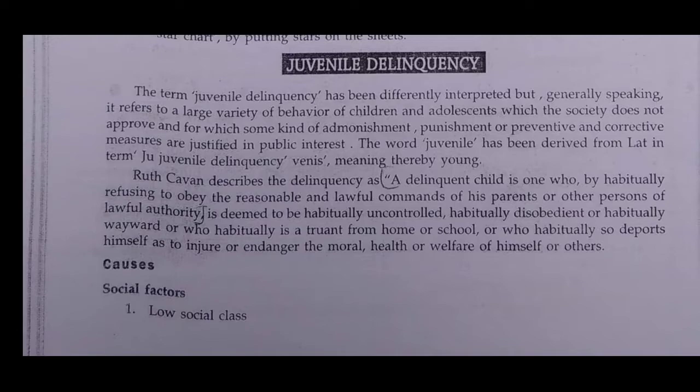Juvenile delinquency refers to the childhood or adolescent period when child-like problematic behavior shows. The child will face punishment or admonishment. It is an unacceptable behavior by the juvenile delinquent children — behavior not acceptable by society — and the society can give admonishment or punishment to the child.